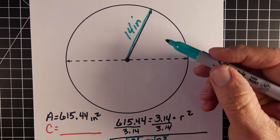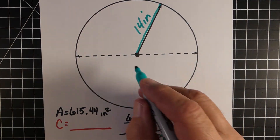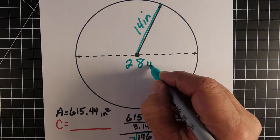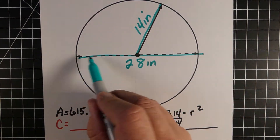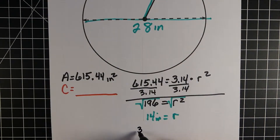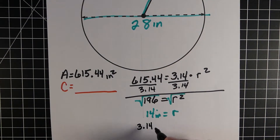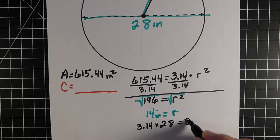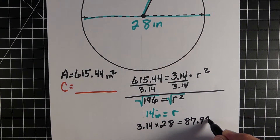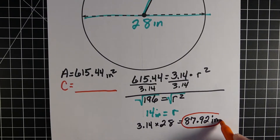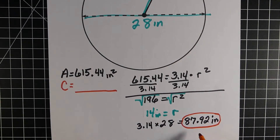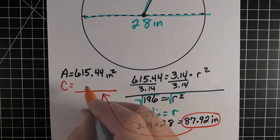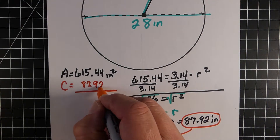Now we can figure out the diameter, which is the distance all the way across. We just double the radius: 14 times 2 gives us a diameter of 28 inches. Now we take 3.14 — that's pi — times our diameter of 28, and that gives us our circumference. The circumference is 87.92 inches. So that's the answer for this example.